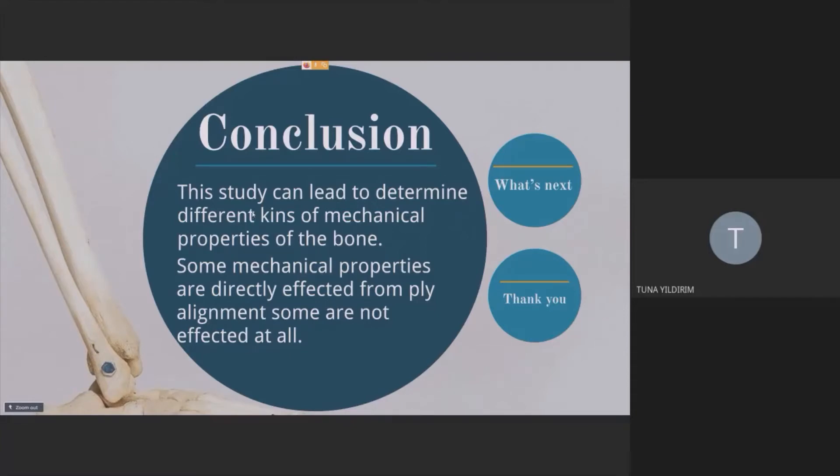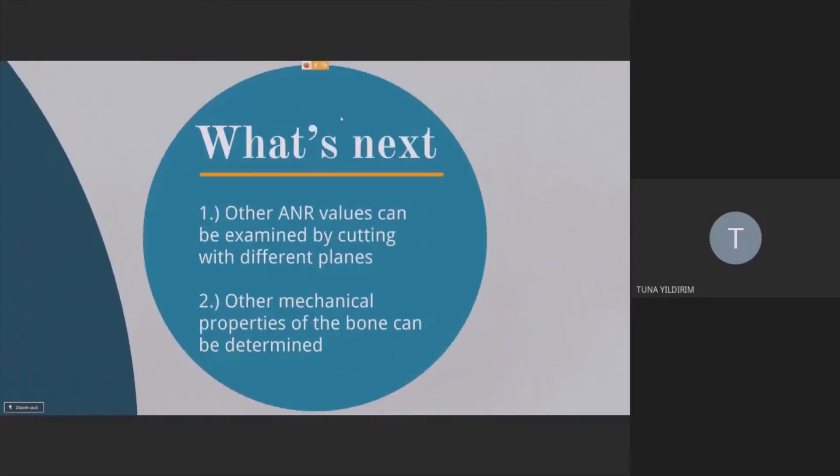And so we find out that some mechanical properties are directly affected from ply alignment and some are not affected at all. And we see that the experimental and the modeling match each other. And this is a good thing.